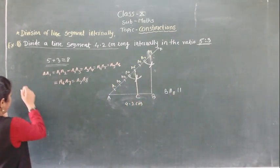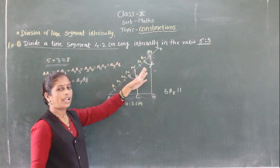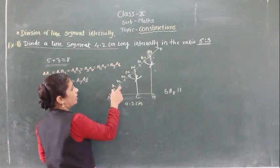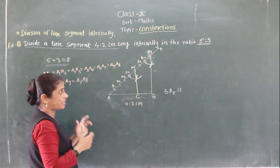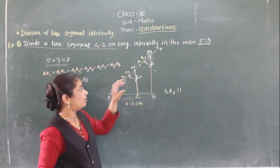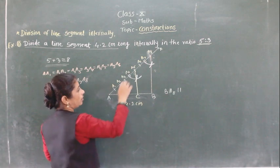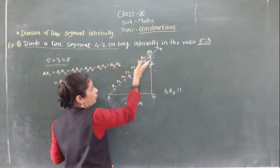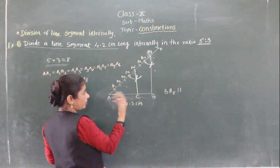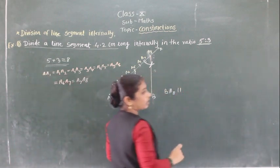Now here we have to write all the steps. Step 1: draw line segment AB of 4.2 cm. Step 2: make an acute angle BAX. Step 3: take a convenient distance in compass and make 8 equal parts on ray AX. Step 4: join A8 to B. Step 5: draw a line parallel to A8B from A5. No need to write how you are drawing the parallel line — just write 'draw a line parallel to A8B from A5.'